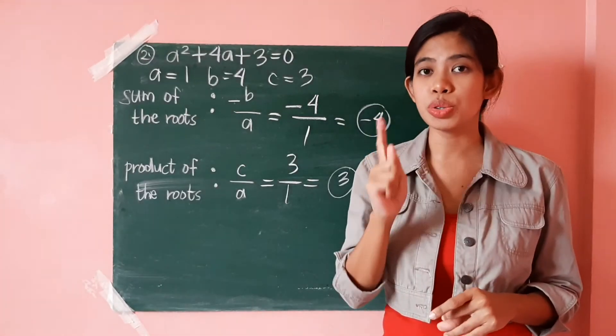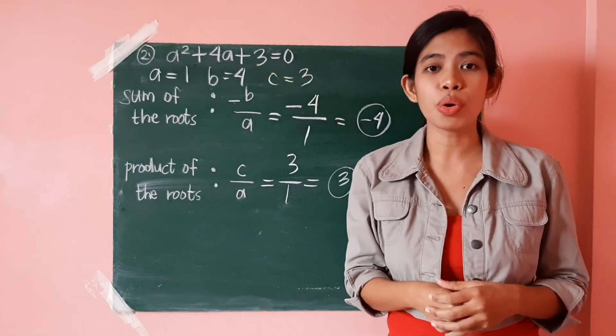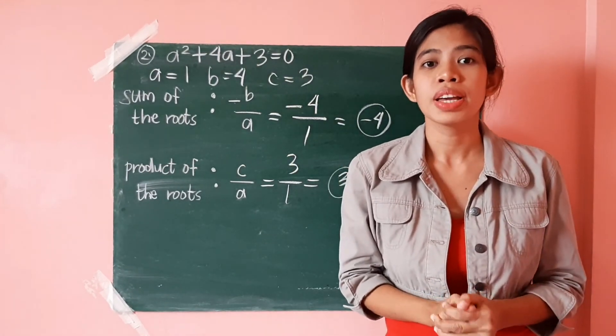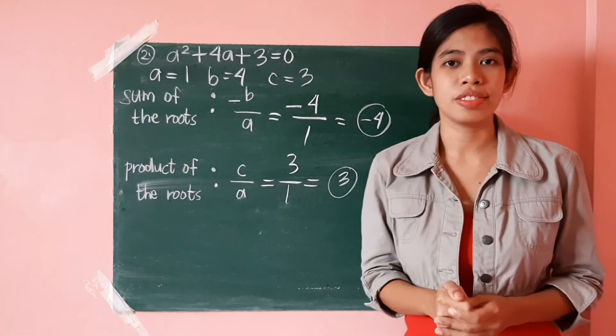So, this means that when you solve for the values of this quadratic equation a squared plus 4a plus 3 equals 0, their sum would be negative 4, and their product would be positive 3.